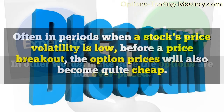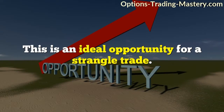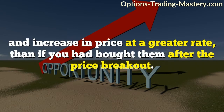Often in periods when a stock's price volatility is low, before a price breakout, the option prices will also become quite cheap — this is an ideal opportunity for a strangle trade. Once the underlying stock price becomes more volatile, the options' prices will also reflect that volatility and increase in price at a greater rate than if you had bought them after the price breakout.